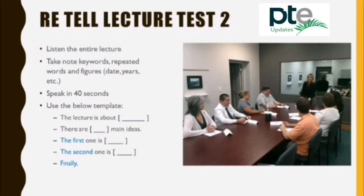First of all, how large should a focus group be? I would say that an ideal number of participants is around six or seven. If it's any bigger, what quite often happens is they break into side conversations and the focus is lost. If it's any smaller, you may not get the range of views that you need to get a really good discussion.